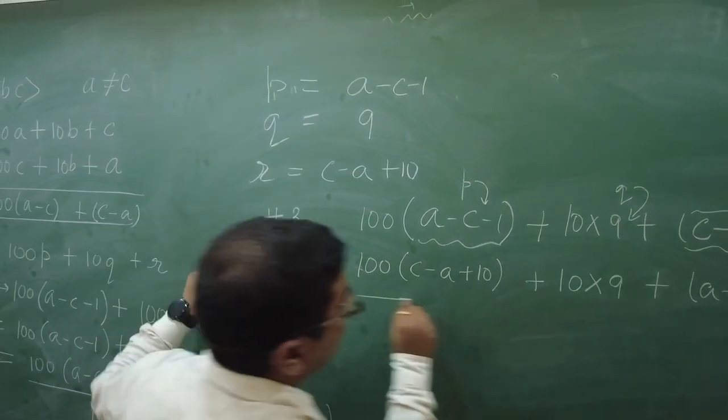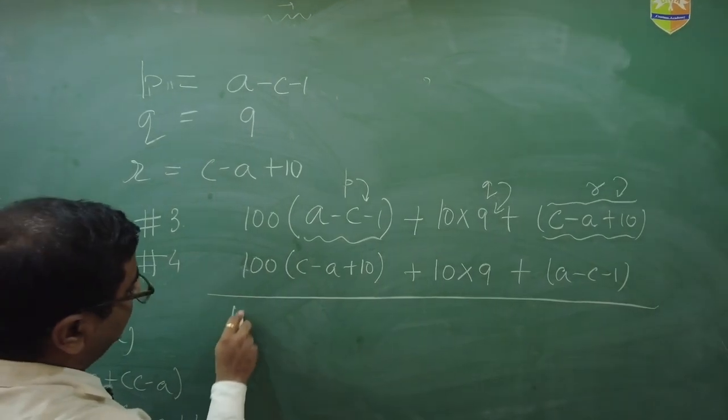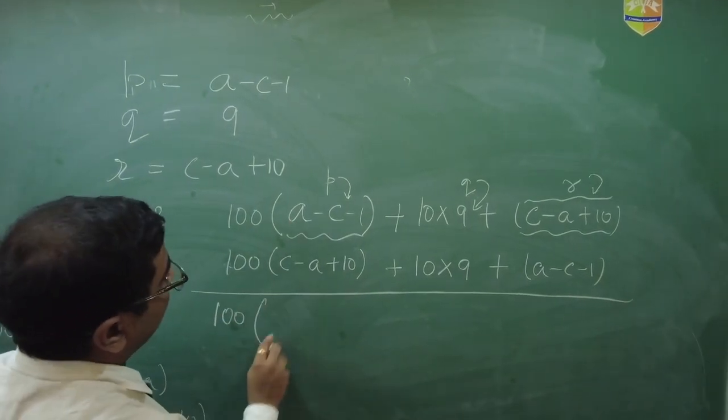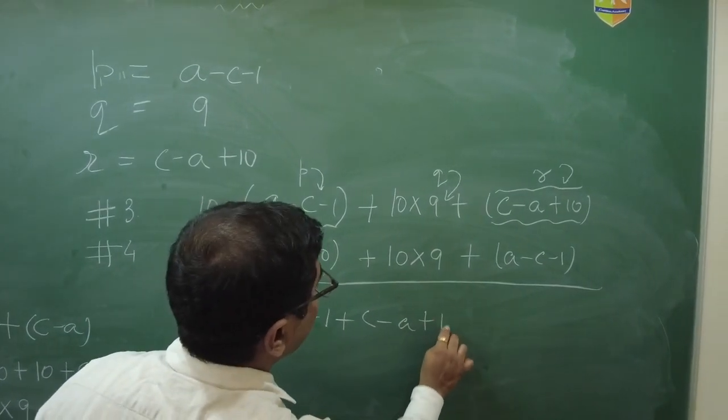Let us add. So, if you see 100 common here. So, what will you get? A minus C minus 1 plus C minus A plus 10. Isn't it?